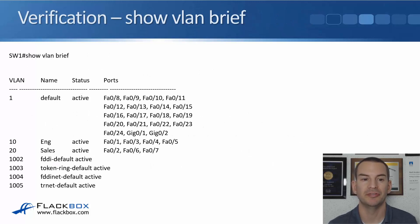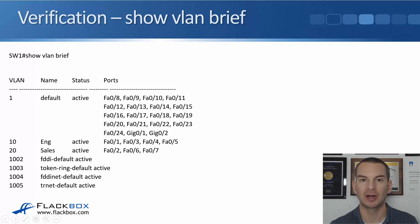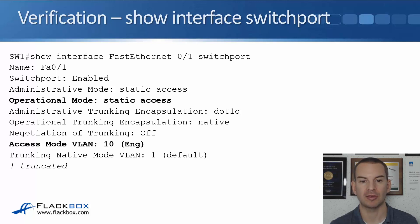To verify, the best command is 'show vlan brief'. This shows all VLANs available on the switch and which ports belong to each VLAN. After our configuration, FastEthernet 0/1, 0/3, 0/4, and 0/5 are in VLAN 10 (ENG), while 0/2, 0/6, and 0/7 are in VLAN 20 (SALES). All other physical ports remain in default VLAN 1. For per-port detail, use 'show interface FastEthernet 0/1 switchport' — this confirms it's an access port in VLAN 10, the engineering VLAN.